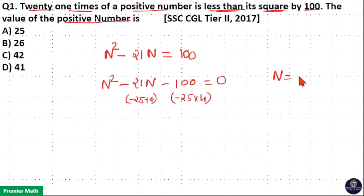That means N is equal to 25 because N cannot be negative. If N is equal to -4, that is not an option.